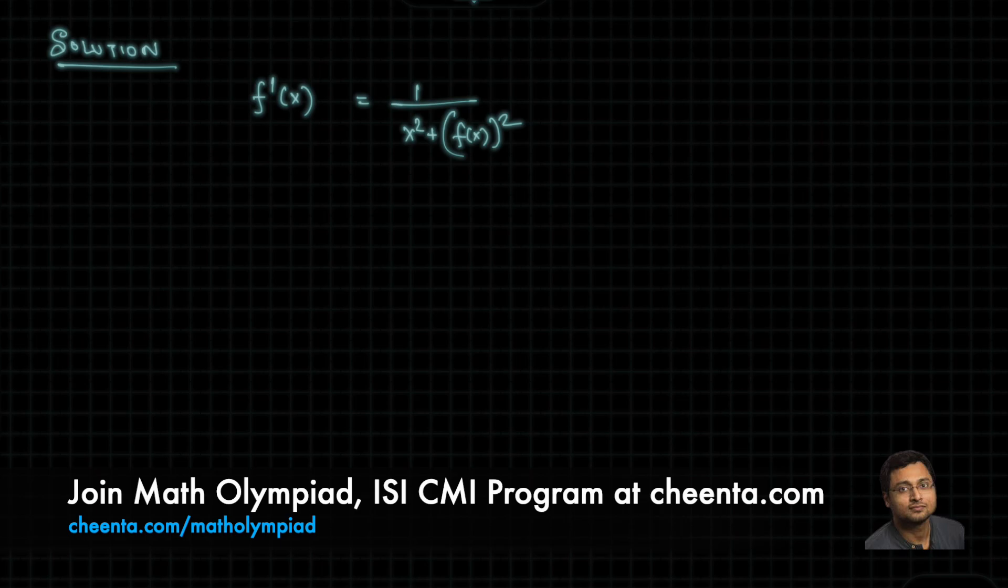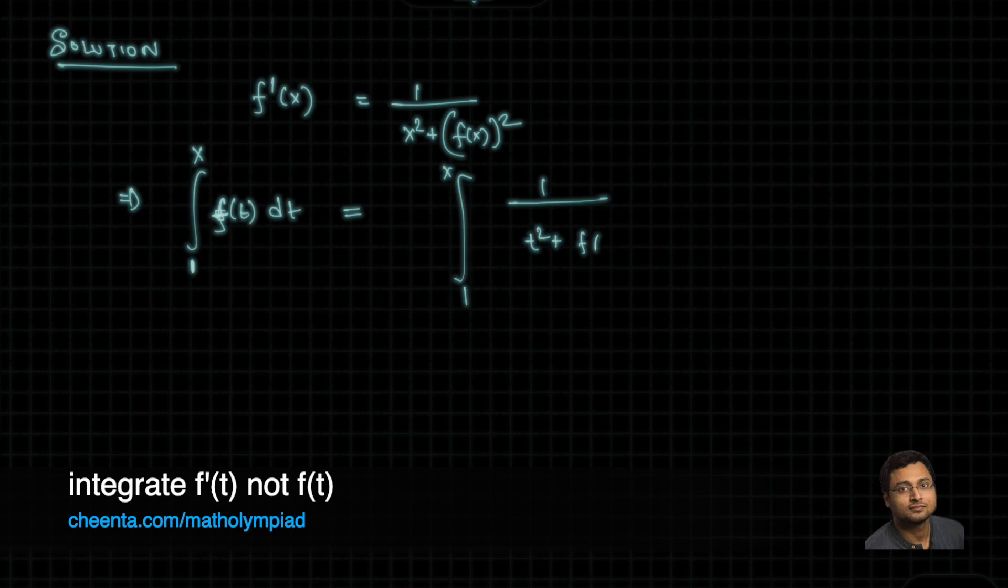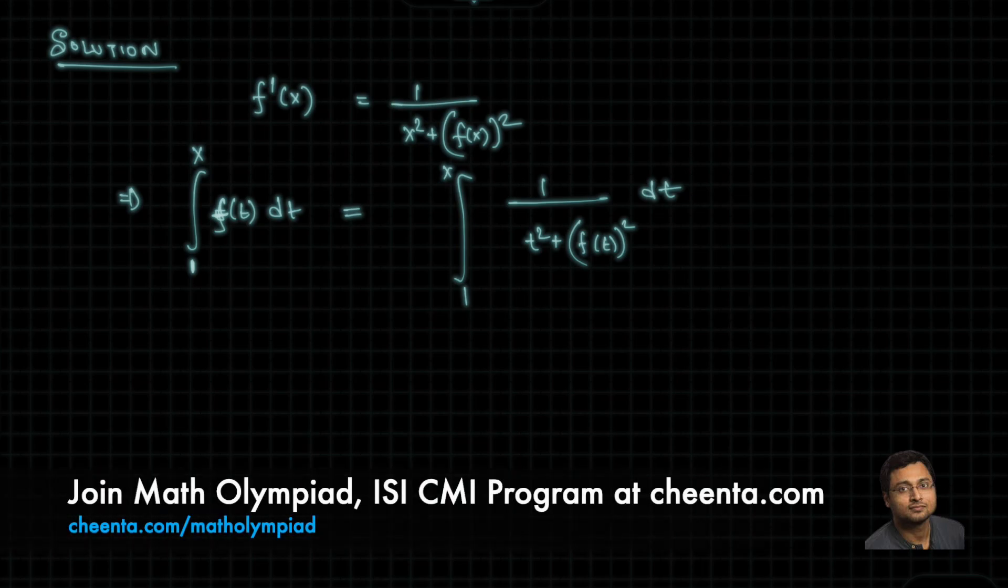So, we have f prime of x is equal to 1 over x square plus f of x whole square. Now I will integrate it from 1 to x. So, I'll change the letter inside. So, instead of x I'll write t. So, integral of f prime of t dt is equal to integral from 1 to x 1 over t square plus f of t whole square dt. So, t is just acting as the variable. This is f prime. So, this thing is quite simple. This is f of t from 1 to x.